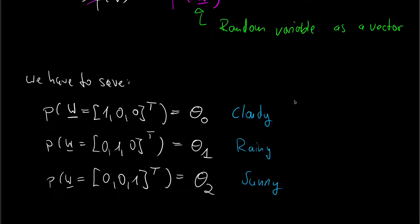And we can put these theta values together in a three-dimensional vector. And this will be our theta vector consisting of theta zero, theta one, and theta two. And this is what we have to save.